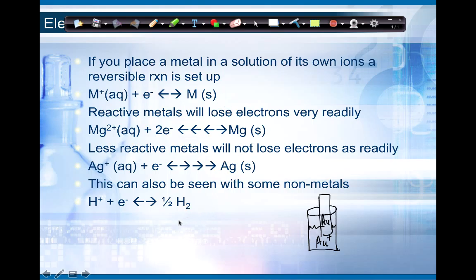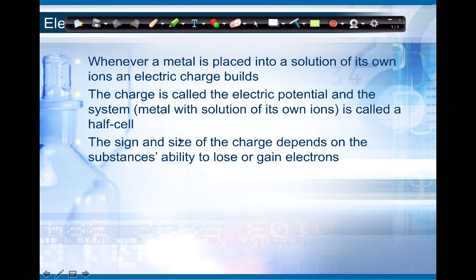We can also see this with some nonmetals like hydrogen gas and some of the halogens as well. Whenever you have this situation where you take a metal and place it into a solution of its own ions, an electric charge builds up. That electric charge is called the electric potential. That system you've set up — a metal with a solution of its own ions — that's called a half cell. The sign and size of that charge depends on that substance's ability to lose or gain electrons.